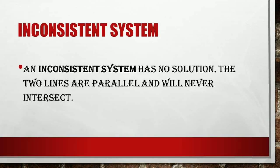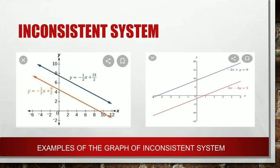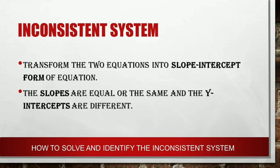Let us now go to the inconsistent system. An inconsistent system has no solution. The two lines are parallel and will never intersect. Here are examples of the graph of an inconsistent system. To identify an inconsistent system, transform the two equations into slope-intercept form. The slopes are equal and the y-intercepts are different.